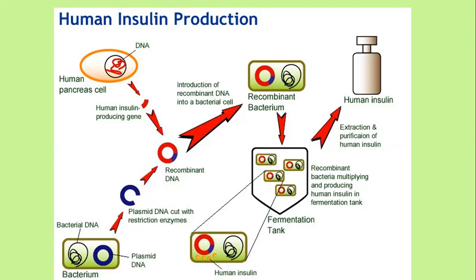Scientists have now worked out a way of producing human insulin — not from humans though. They have taken bacteria, extracted the plasmids from those bacteria, and cut the plasmids open using a restriction enzyme. They've also taken human pancreas cells and extracted the gene for making human insulin, because it came from a human cell. Putting it together with the ligase enzyme and the cut plasmid, they've made recombinant DNA. This is now a recombinant plasmid.